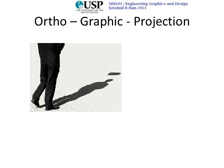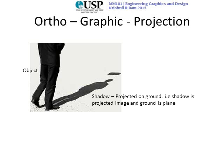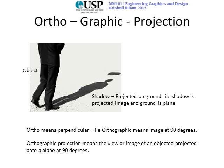Let's look at orthographic projection more closely. In this picture, we see a man standing — that man is the object, the shadow of the man is projected onto the ground, the shadow is the projected image, and the ground is the plane. Similar to the shadow and the object, we will look at how we can project the image onto two planes for various 3D objects. 'Ortho' means perpendicular, and 'orthographic' means an image at 90 degrees. So orthographic projection basically means the projection of an image onto a plane at 90 degrees.